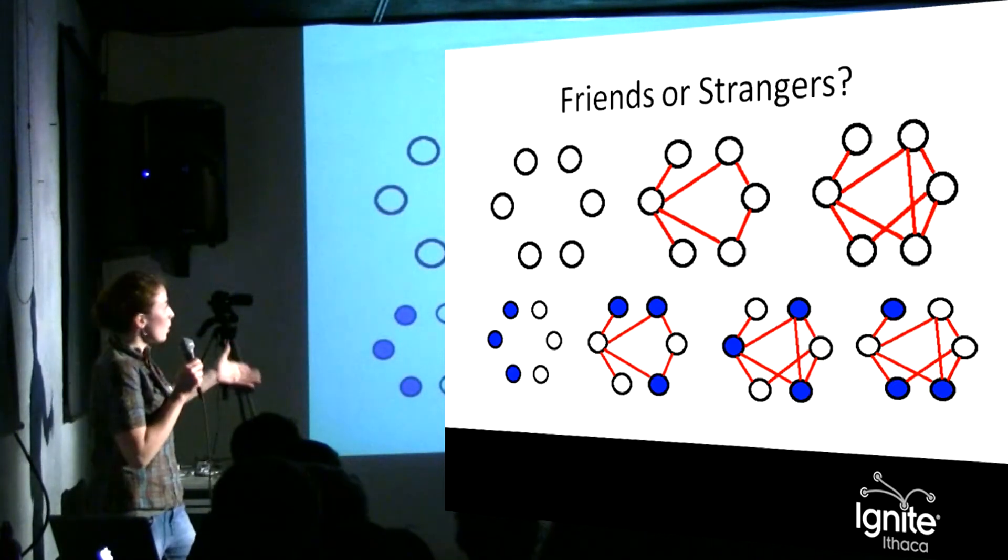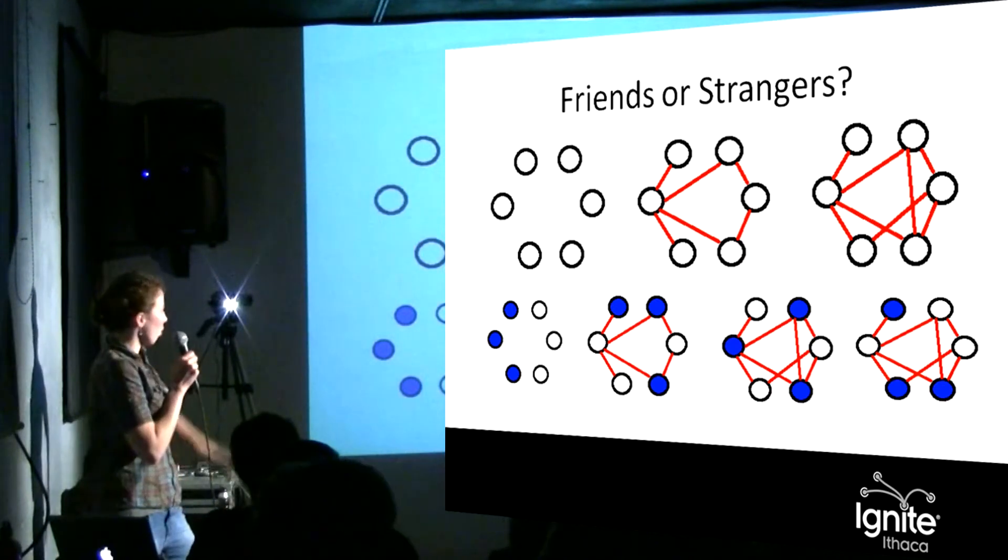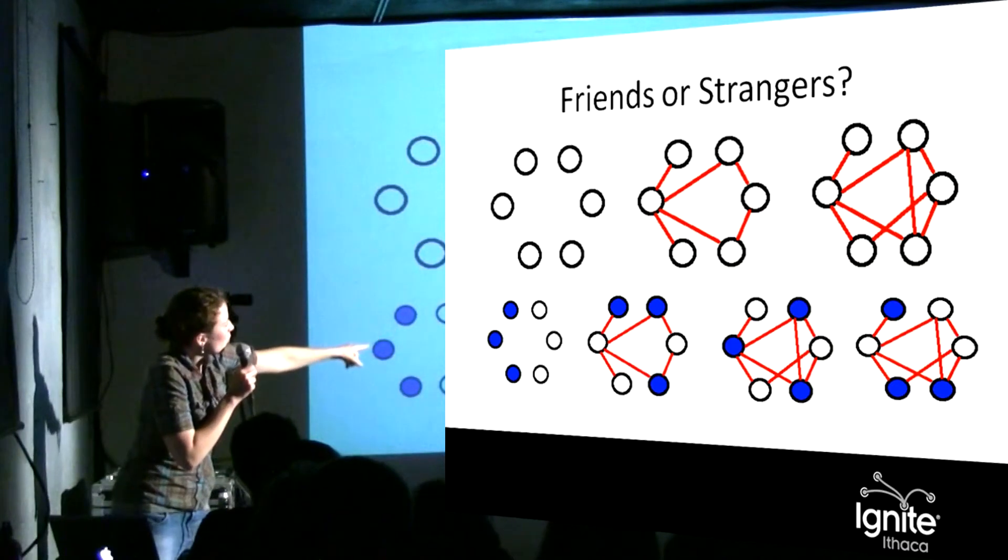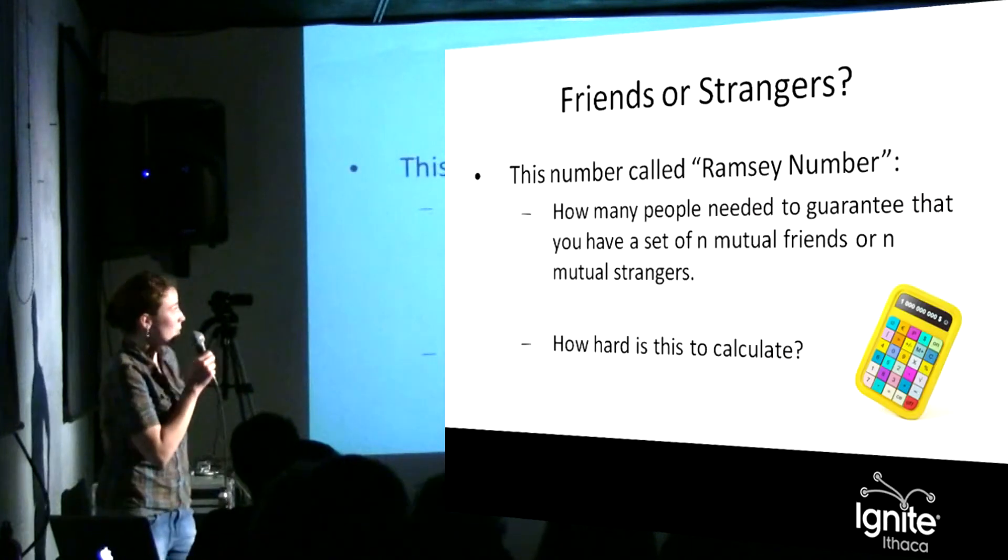So it turns out if you have six people, three of them either have never met any of them, or three of them know each other. If nobody knows each other, there are three mutual strangers. And over in that third one, there's both a group of three people that know each other, and a group of three people labeled in blue who don't.